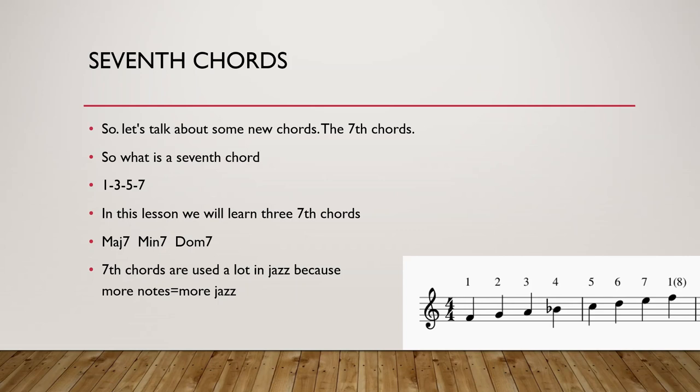7th chords are used a lot in jazz because more notes equals more jazz. In jazz it is the standard that all chords have at least 4 notes — 7th chords are the standard, and you can make even more complex chords. But this is Compose Classical Music for Dummies, and in classical music we most of the time have chords of just 3 notes. I wanted to talk about major, minor, and dominant 7th as well, because it is important to know, especially if you want to compose in jazz.